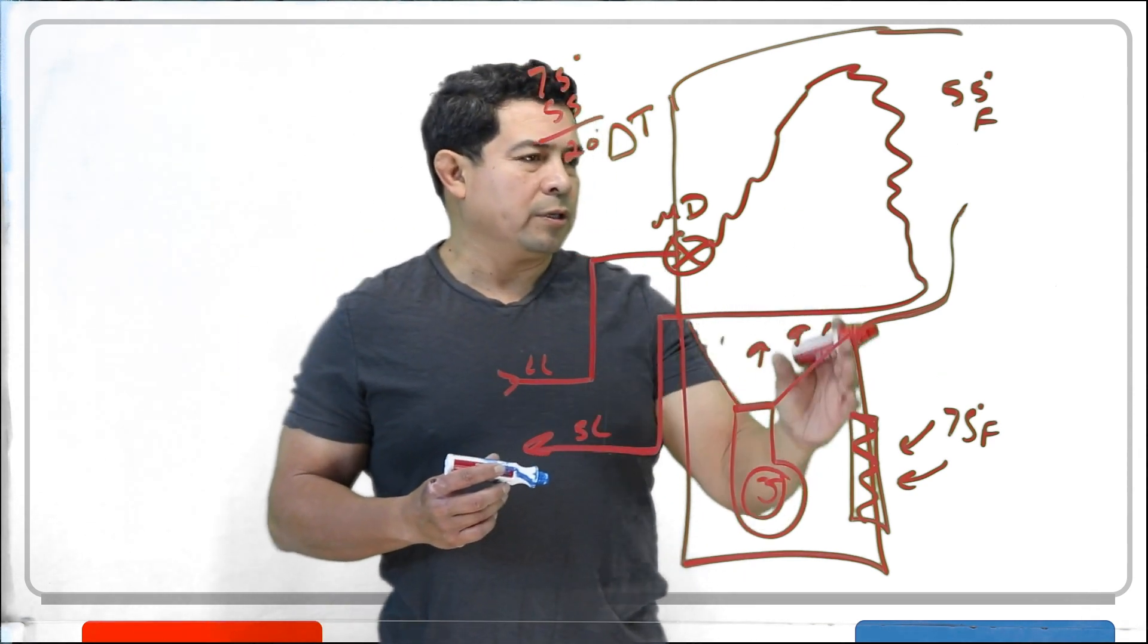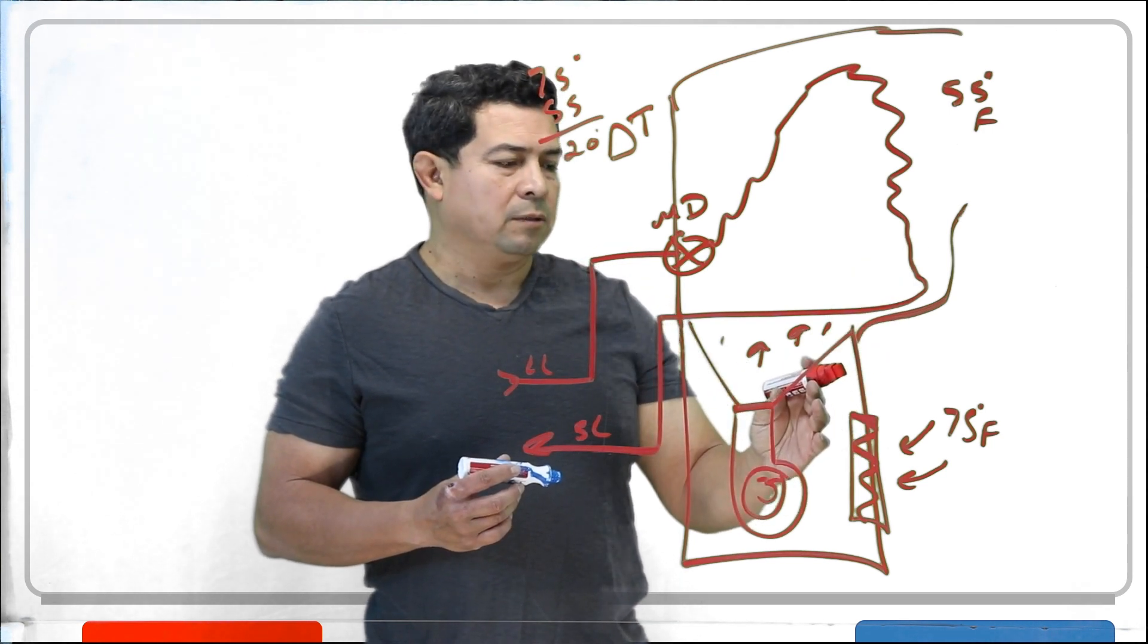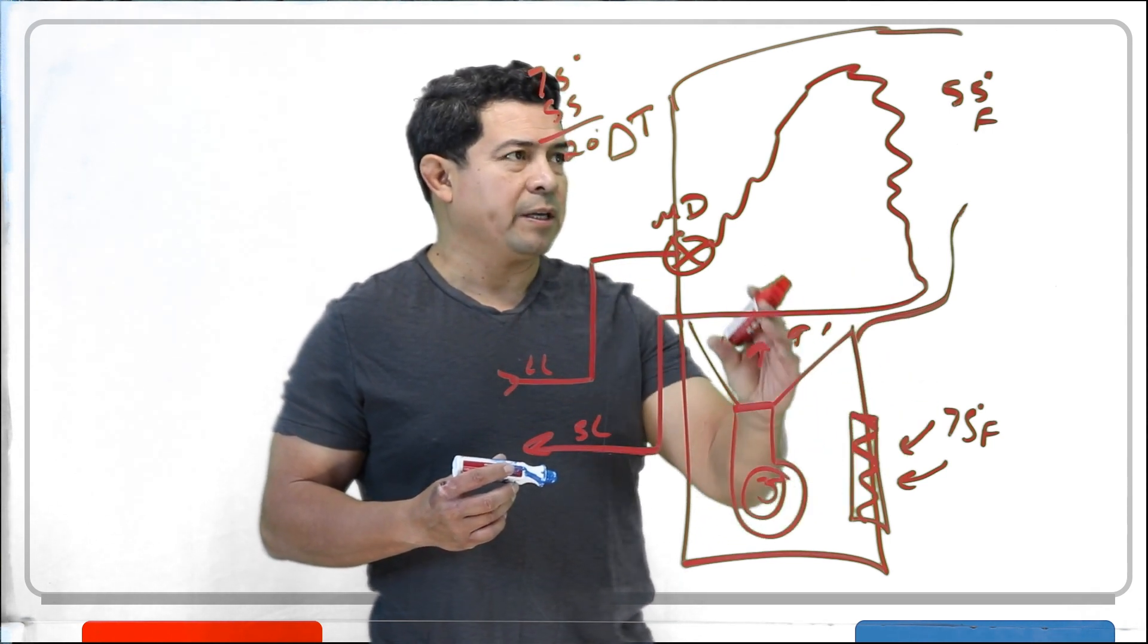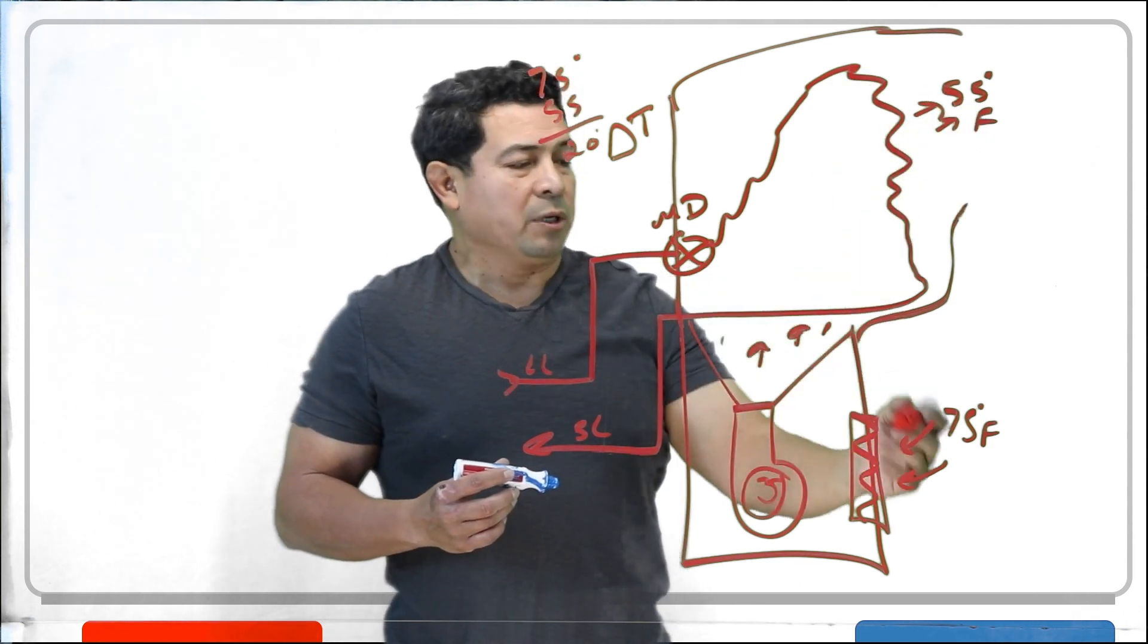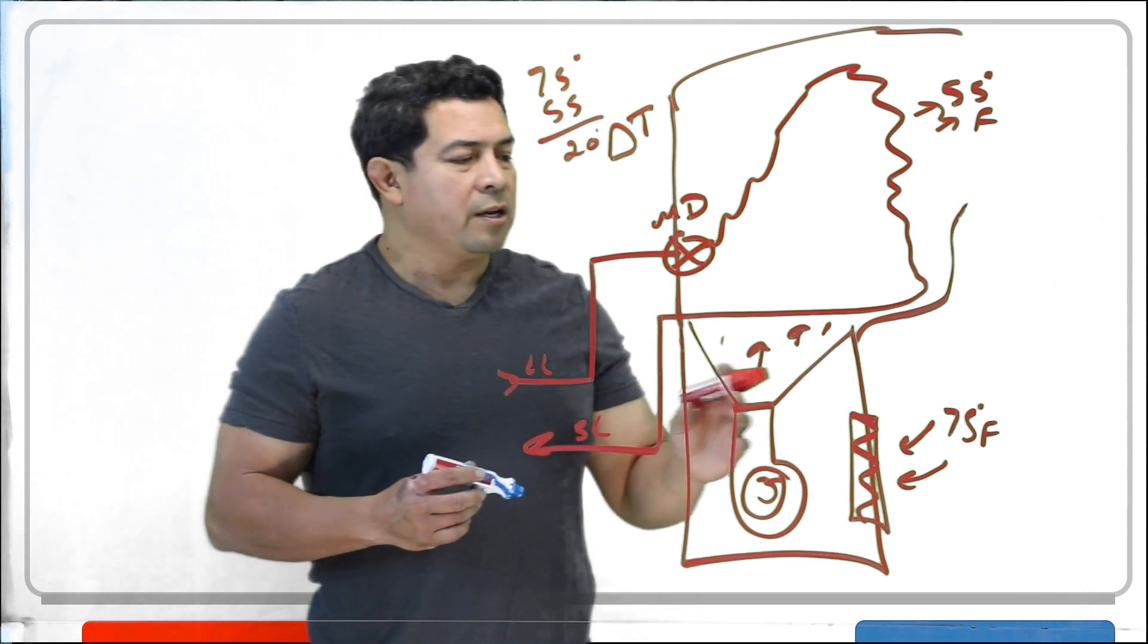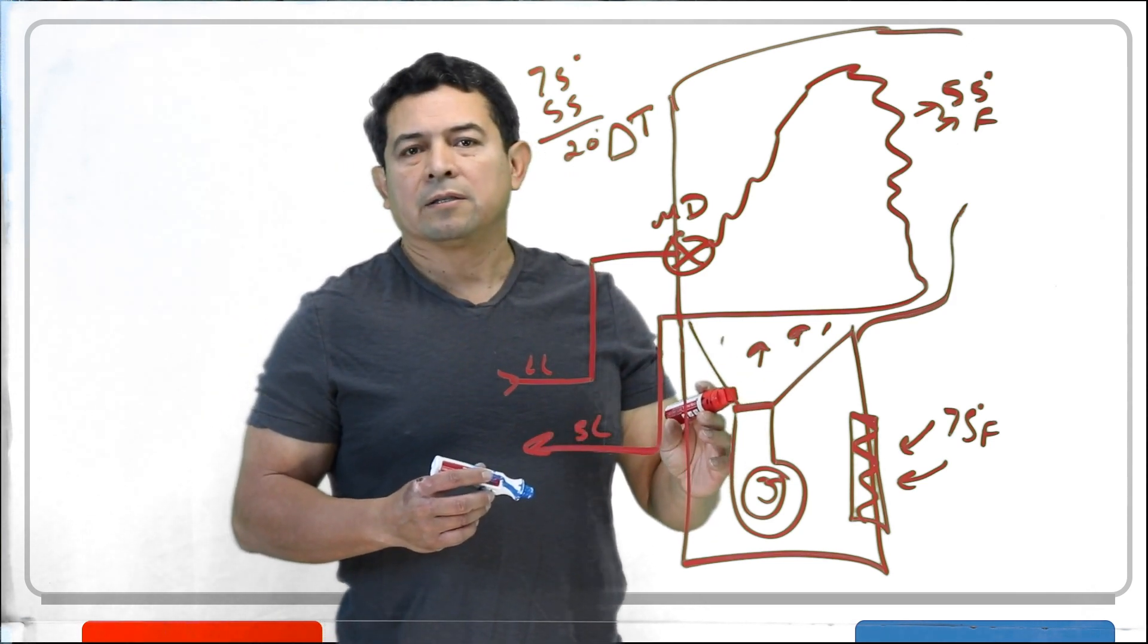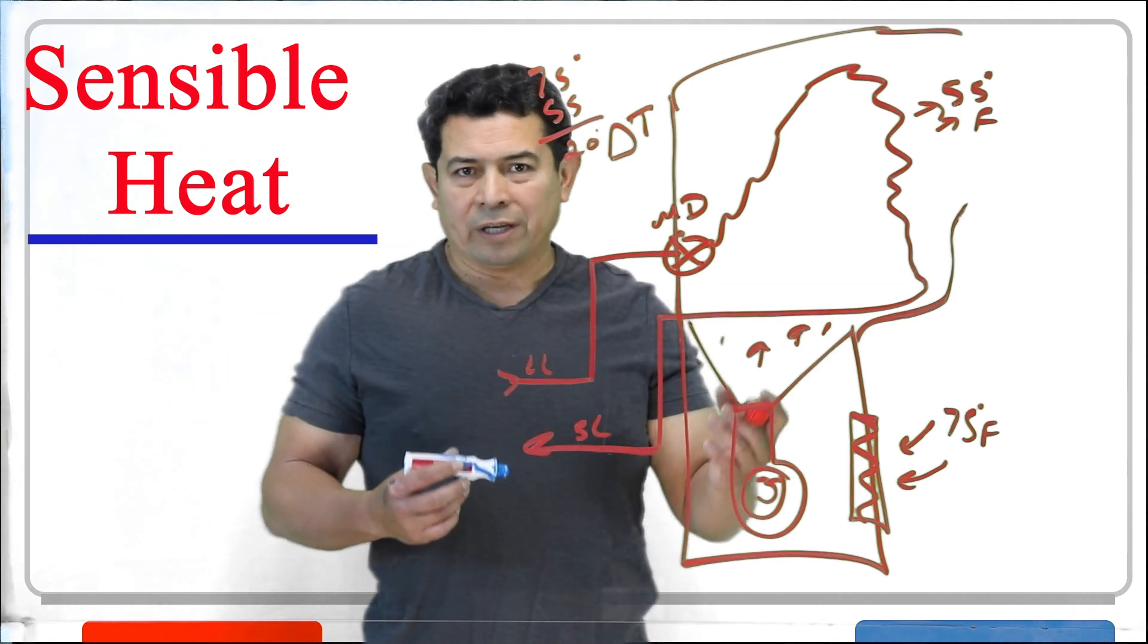But here, this refrigerant that's in the evaporator is going to be absorbing the heat from the air that's coming in here and putting out colder air. Because we have this delta T, because we have a temperature difference, now we know that is sensible heat. That's sensible heat because we can sense it, we can feel it.